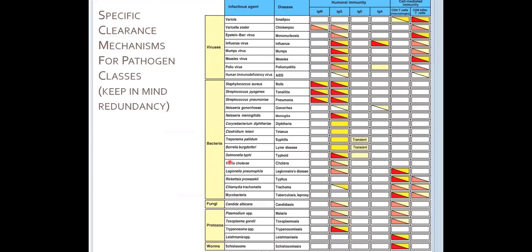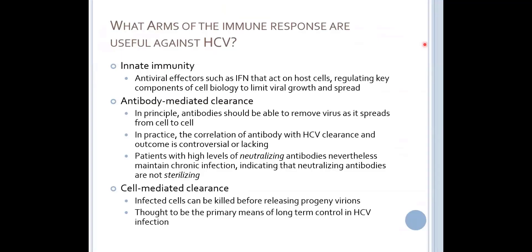If we think back to the mechanisms of immune responses we would want to use to get rid of this virus — because it's intracellular, we're going to want to use CD8 T cells to kill, and then potentially we could use innate immunity. We're going to talk about actual clinical studies that have looked at the relative role of each of these arms of the immune system and how effective they are.